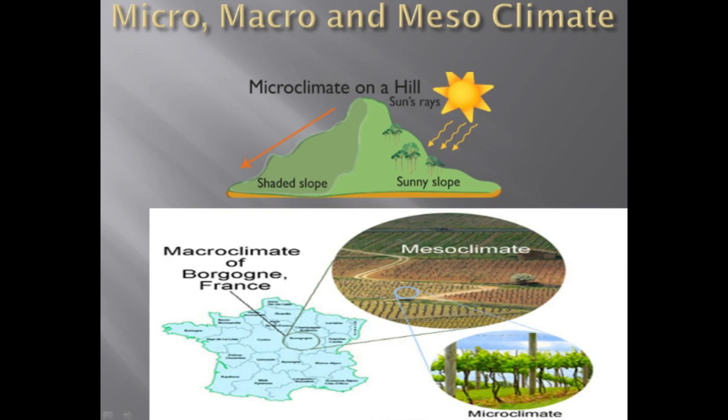Macroclimate consists of patterns on the global, regional, and local level, while microclimate consists of very fine patterns, such as those encountered by the community of organisms underneath a fallen log. The combination of climate conditions in a particular area within a macroclimate is called a mesoclimate — for example, a region in France would dictate the macroclimate, but a particular vineyard site would have its own mesoclimate.